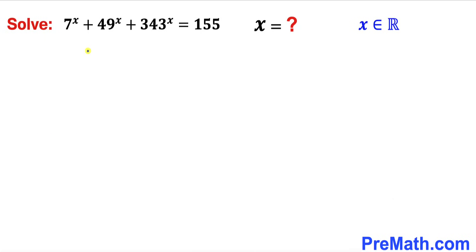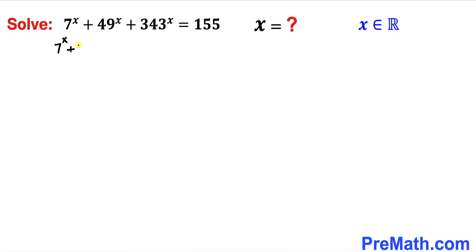Let's get started. Here's our very first step — let's focus on this 49. 49 could be written as 7 power 2, and likewise 343 could be written as 7 power 3. So therefore our equation is going to become 7 power x plus 7 power 2 whole power x plus 7 power 3 whole power x equals to 155.